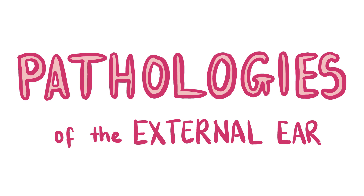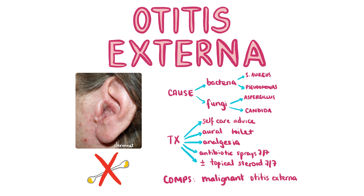Now let's move on to some pathologies of the ear. Otitis externa, also known as swimmer's ear, is an infection of the external auditory meatus with bacteria such as Pseudomonas and Staphylococcus aureus, or fungi such as Aspergillus and Candida. Patients may present with otalgia and otorrhea.